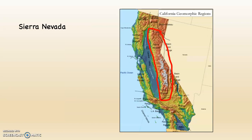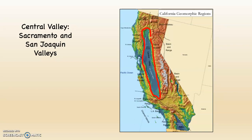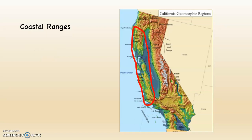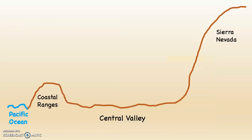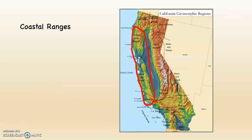This is a map of California. On the right-hand side is the Sierra Nevada, circled in red — the highest mountain range in the contiguous 48 states. This is the Central Valley of California, which includes the Sacramento Valley and the San Joaquin Valley — the Sacramento Valley is the northern one-third and the San Joaquin Valley is the southern two-thirds. These are the coastal ranges along the coast. Mount Whitney is 14,494 feet. The coastal ranges are not nearly as high, but there are mountains up to 5,000 feet — I've seen snow on them driving up Highway 101.